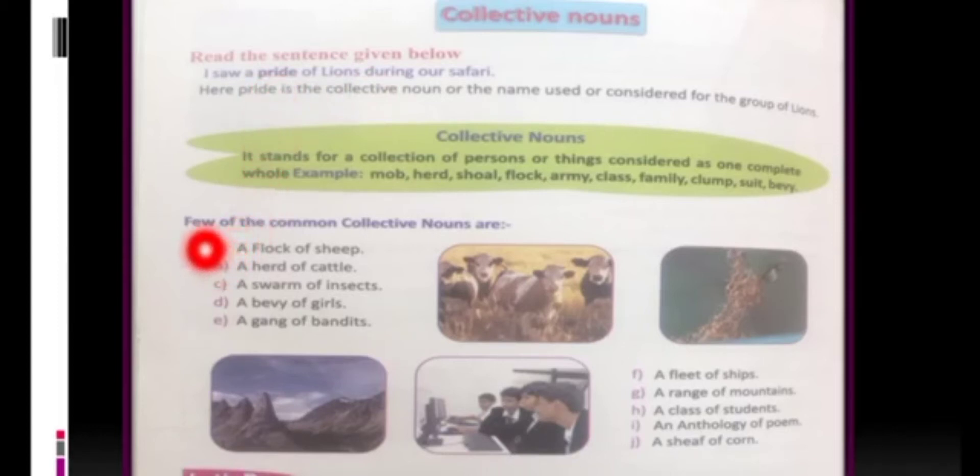Let's move ahead. Few of the common collective nouns are: A flock of sheep, A herd of cattle, A swarm of insects or a swarm of bees, A bevy of girls, A gang of bandits. Bandits are your robbers, your thieves.